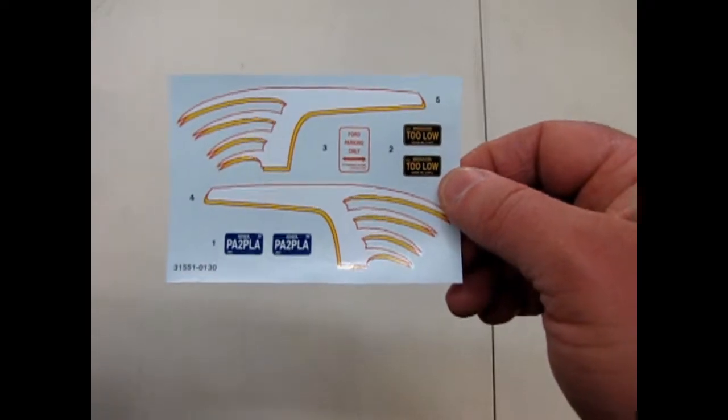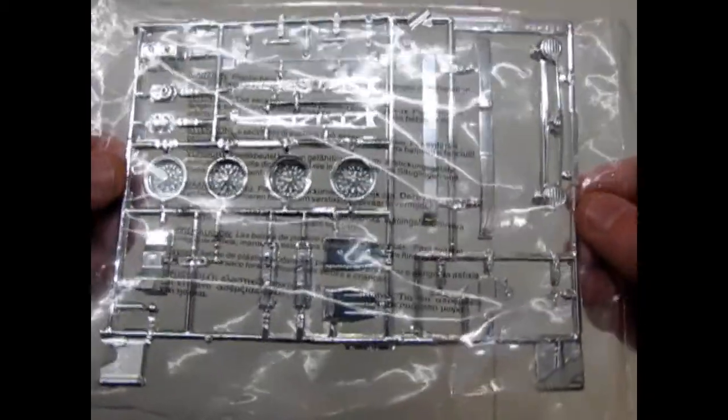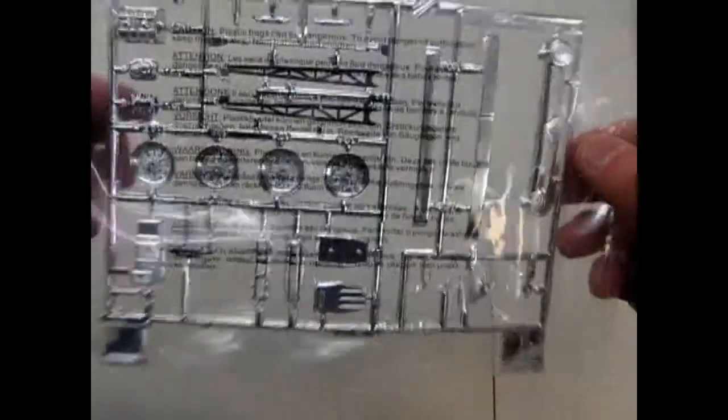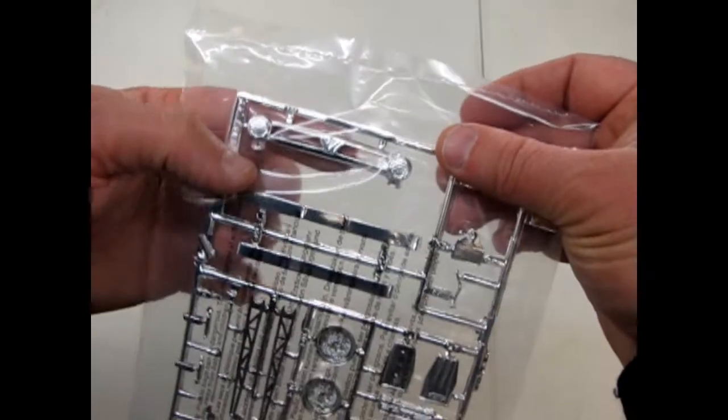Now we're going to look at our chrome. I'm not going to take this out of the bag because the bag actually protects our chrome. So we've got these great wire wheels and these great ladder rails as well as an open-ended Ford front grille, the classic front grille.